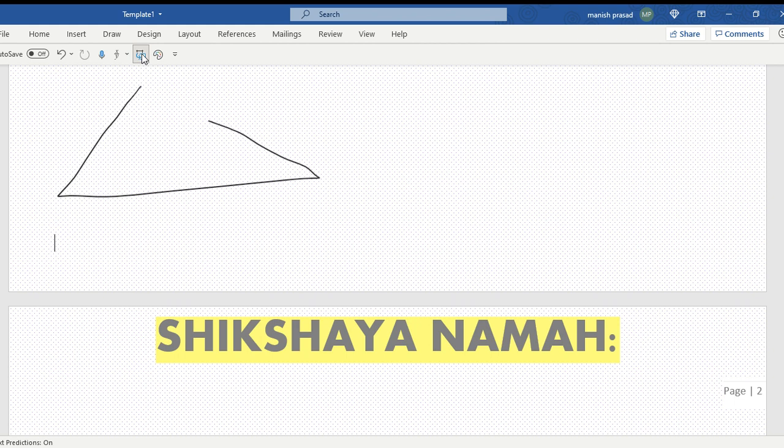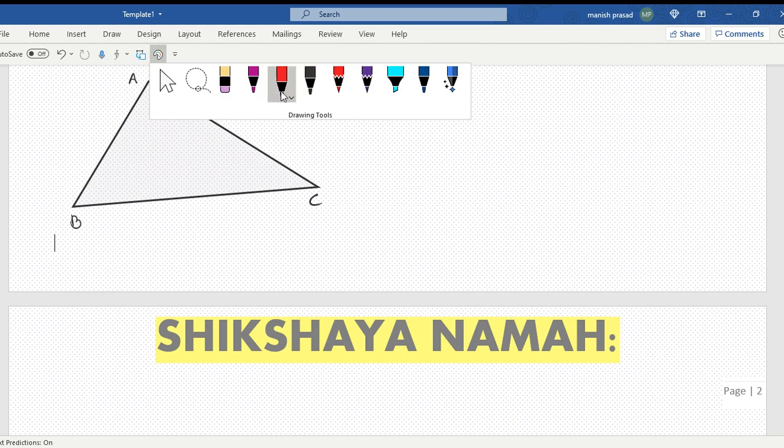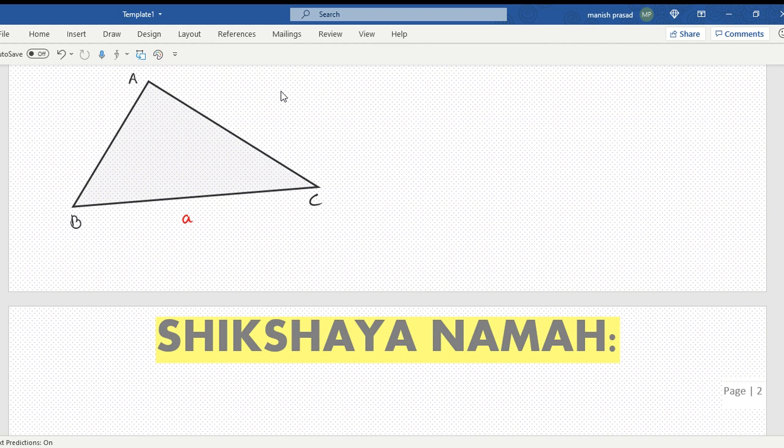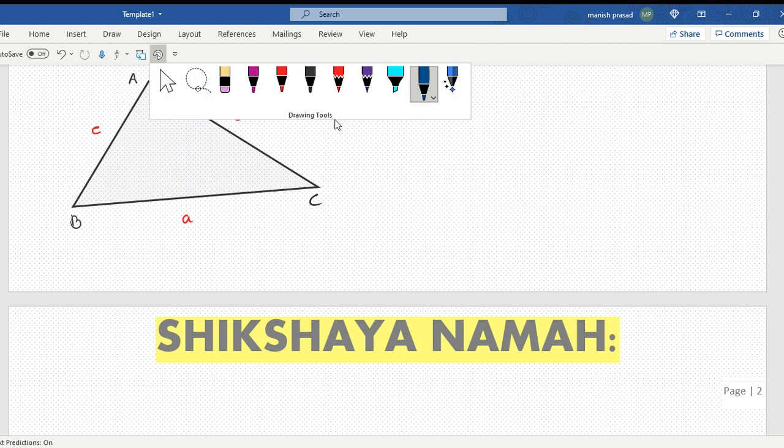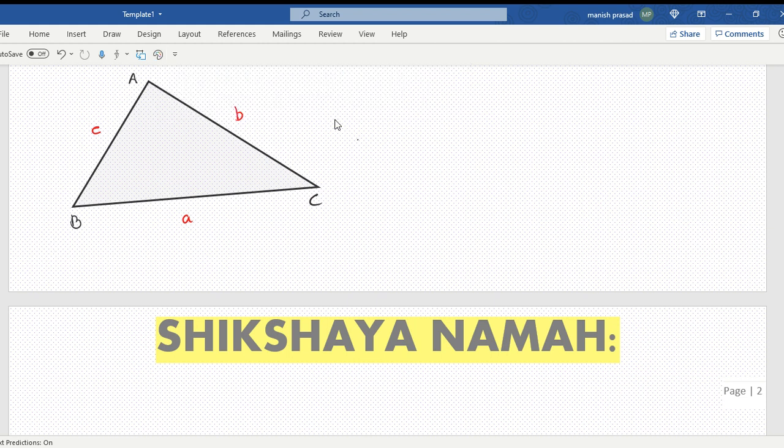So we have it here. This is any triangle ABC. The sides opposite to them are: opposite to angle A is A, opposite to angle B is B, opposite to angle C is C. And our sine rule says that A upon sine A equals B upon sine B equals C upon sine C.